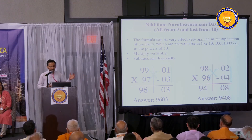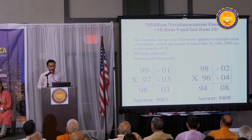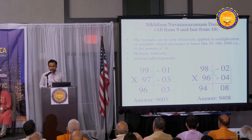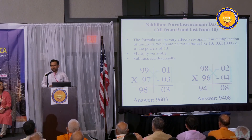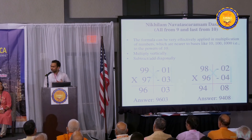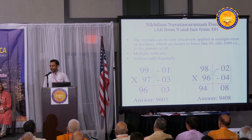What is 98 minus four? It's 94. So we're going to put 94 over there. Your answer is 9408. That's how easy it is to understand. If you don't believe it, you can check it on your calculator.